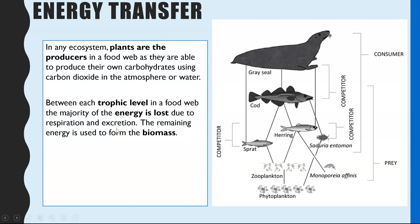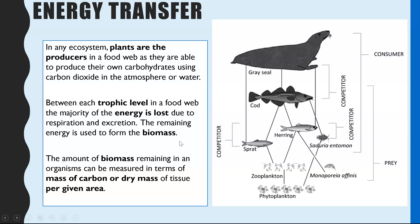Energy is also lost through excretion — in faeces, urine, and exhaling carbon dioxide. Whatever energy is remaining is available to form biomass, and that's the key concept here, because biomass is what is available to be passed on to the next trophic level.